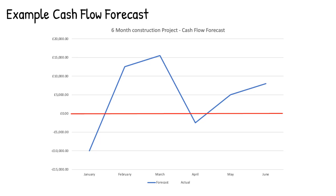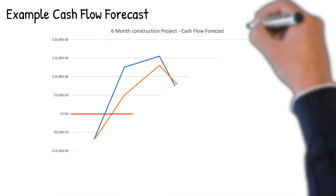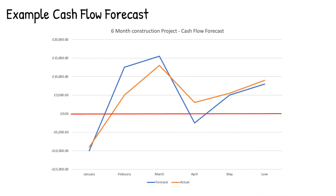It can be useful to update the cash flow based on actual progress and cash inflows and outflows as they occur. The actuals can be plotted on the same graph — shown in orange versus the planned forecast in blue — to present actual progress versus planned, and any variation between the two. This sometimes helps with future analysis and lessons learned on future projects.